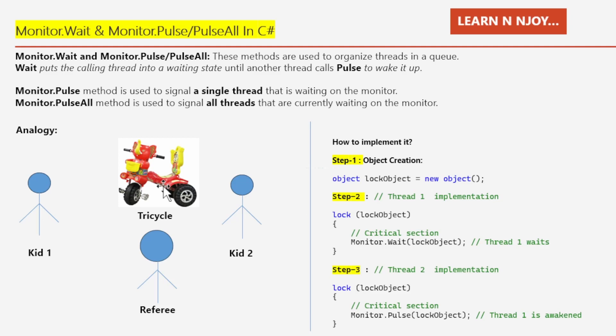Let's see the code. We need to follow three steps. Step one: create an object called lockObject — that is, object lockObject = new object(). This object will be used as a synchronization lock, ensuring that only one thread can access the critical section at a time.